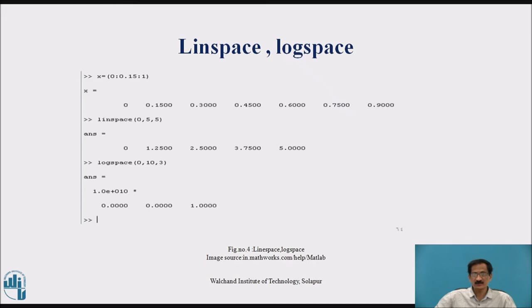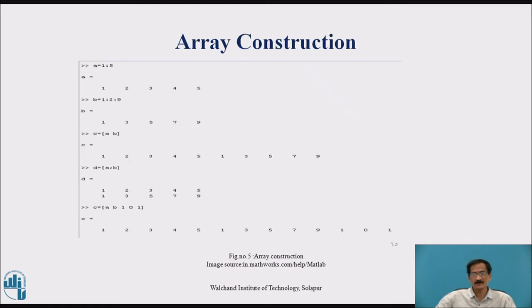Line space and log space. Let x is equals to 0 colon 0.15 colon 1 that will display numbers from 0 to 1 with a step of 0.15. After executing this command, it will give the elements as x is equal to 0, 0.15, 0.30, 0.40, 0.50 and so on. Line space 0, 5, 5 will give the result 1.25, 2.5, then 3.75 and 5.